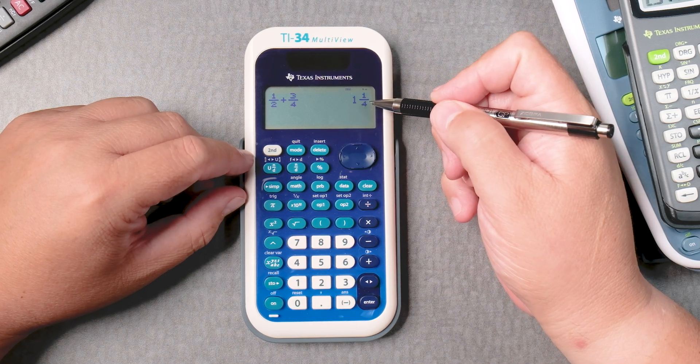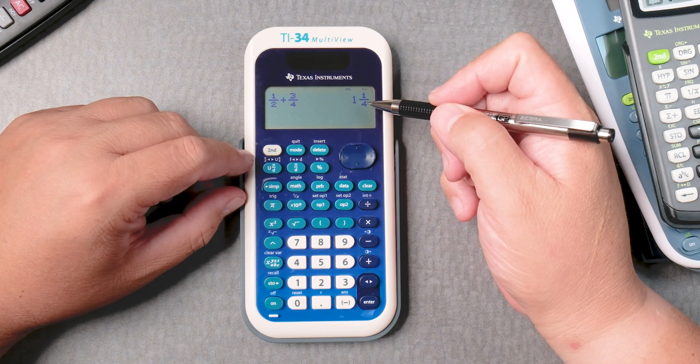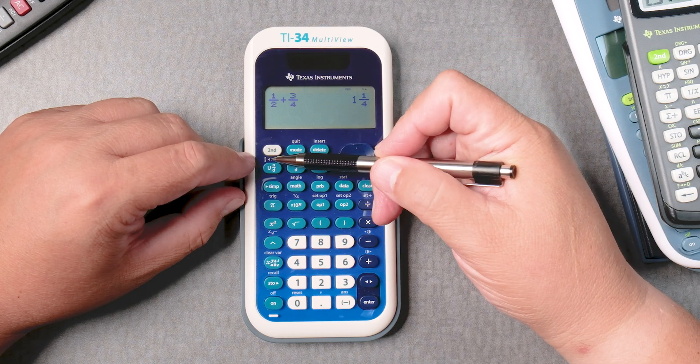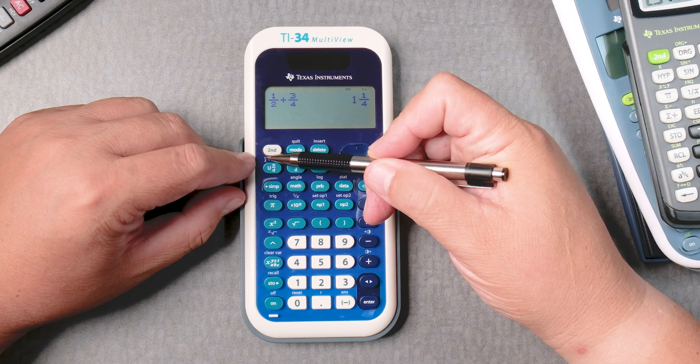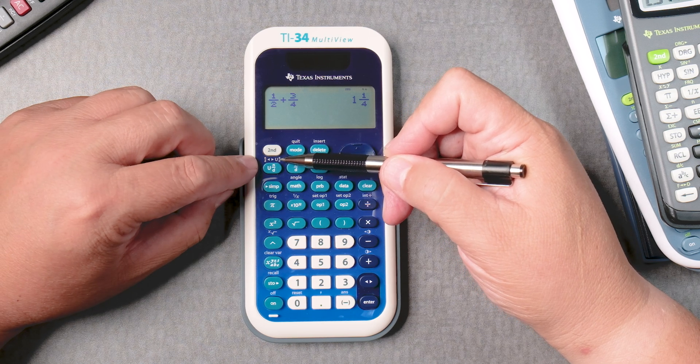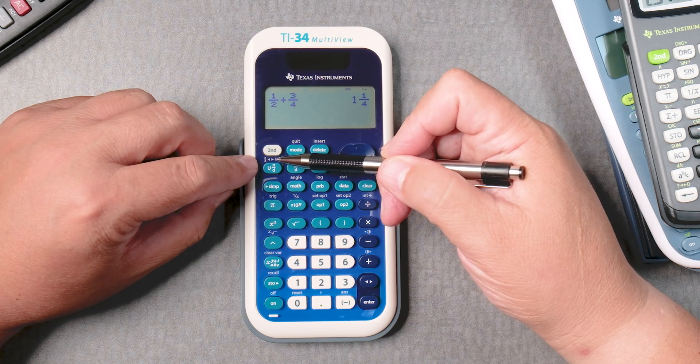Let's say I wanted this 1 and 1 fourth as an improper fraction. Over here you have N over D interchange with U N over D. You can go back and forth,